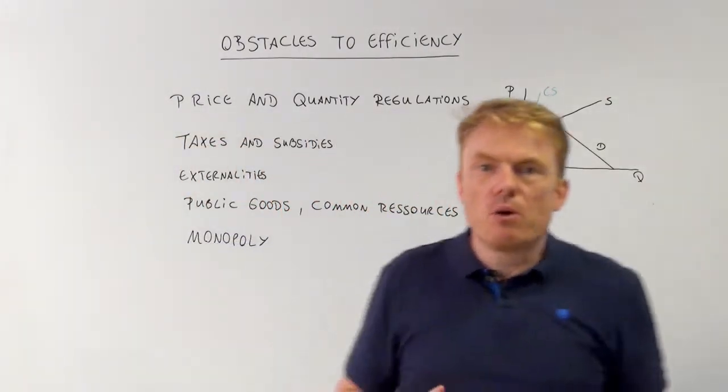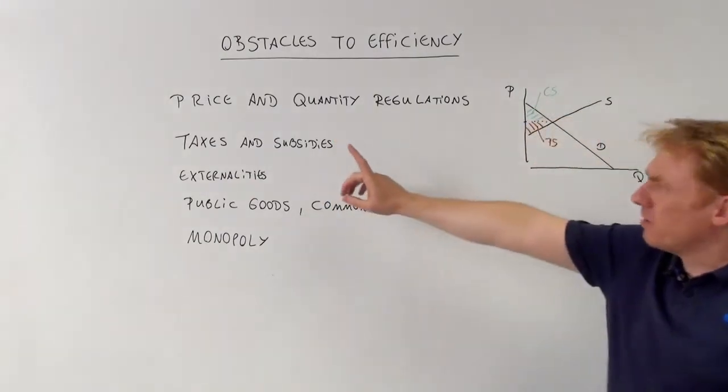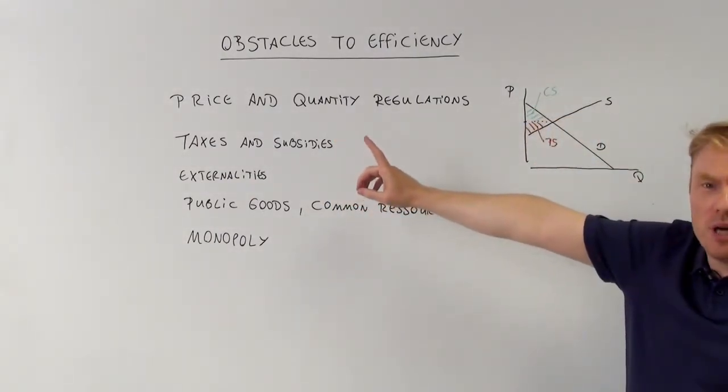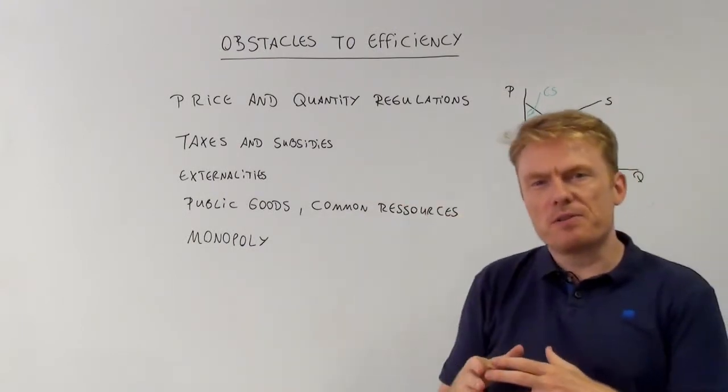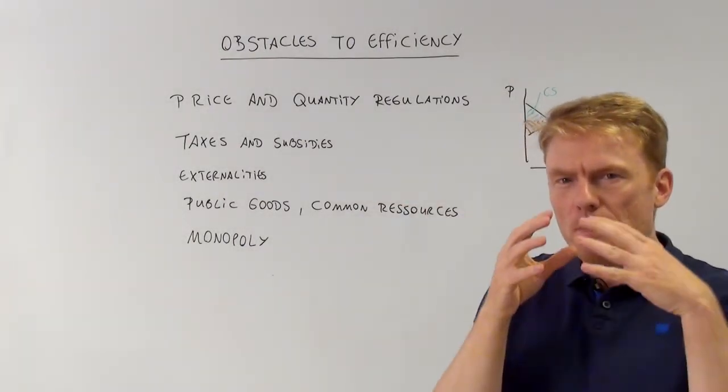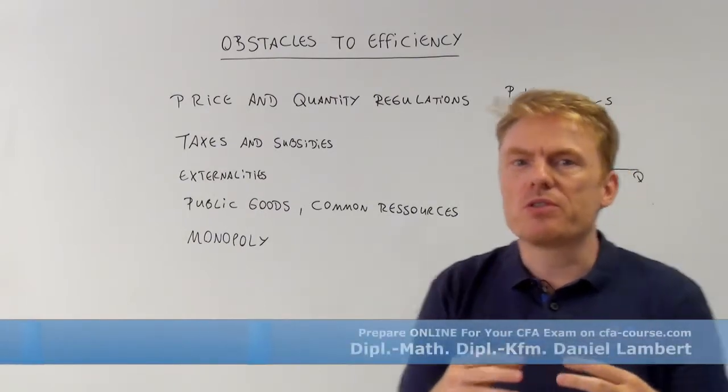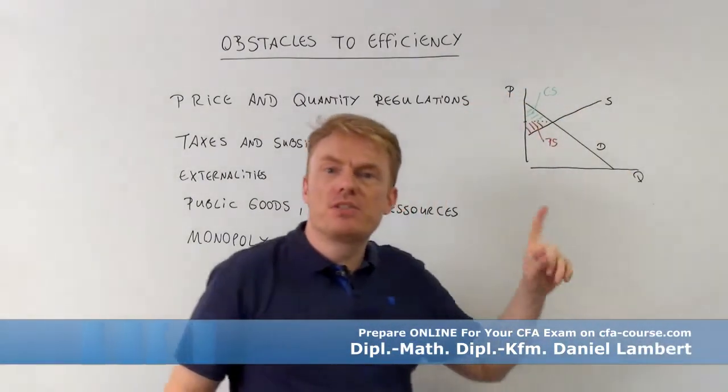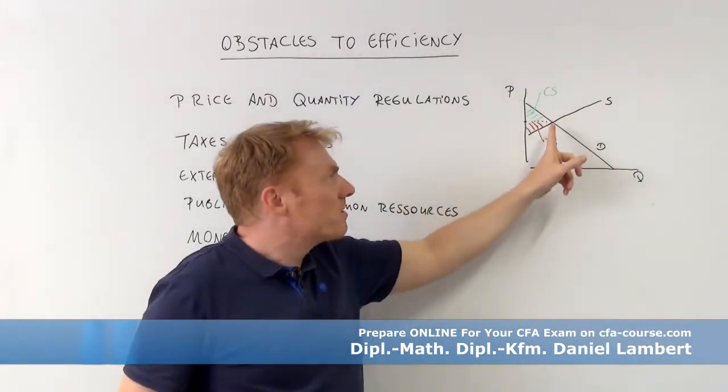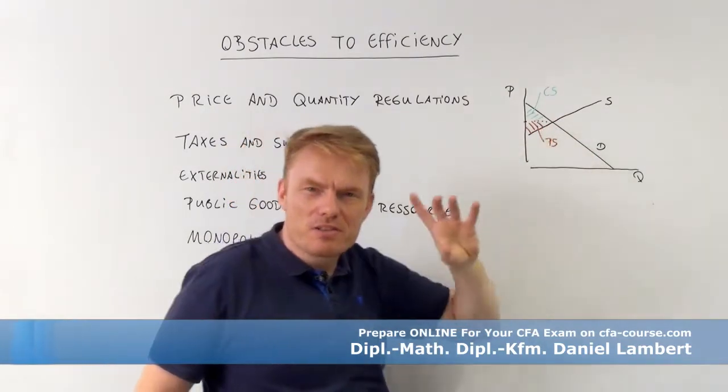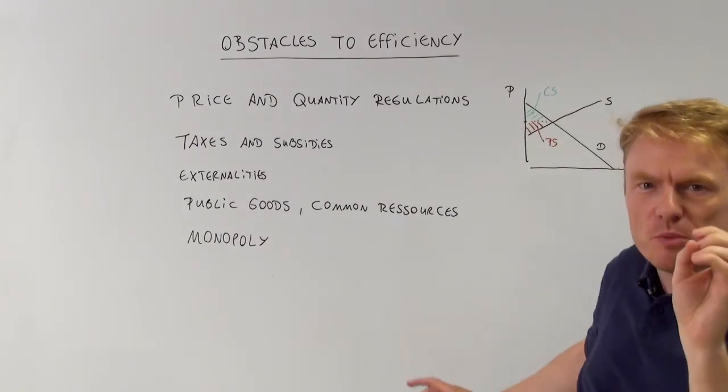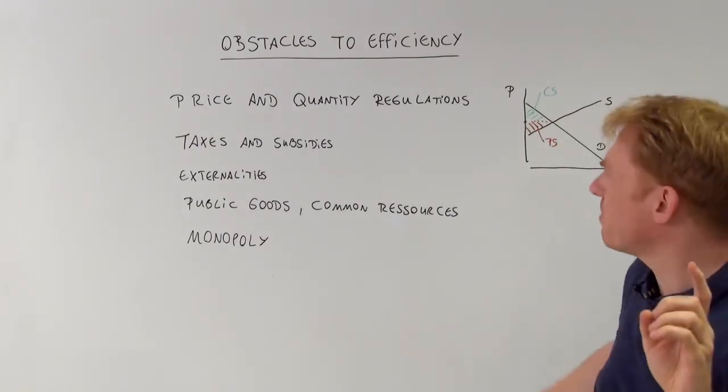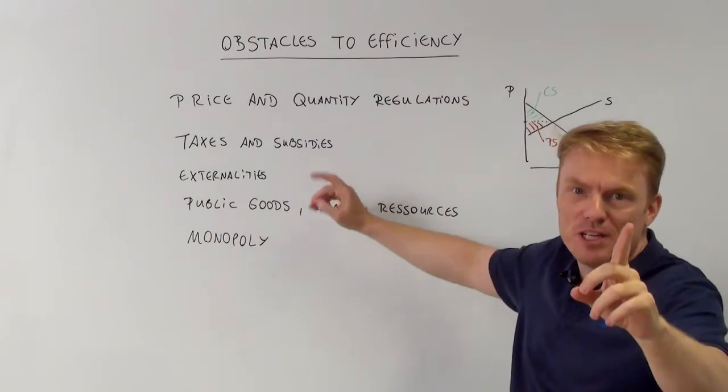Which is not true at all if we have obstacles like price regulations, quantity regulations. We'll see in different videos that there are many ways to reduce social welfare, that there is a so-called deadweight loss here in this little aspect of consumer surplus and producer surplus. Let's wait for different videos.